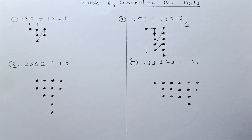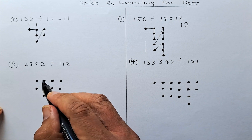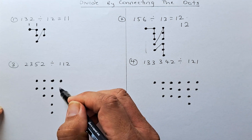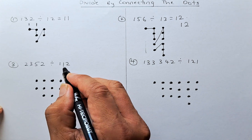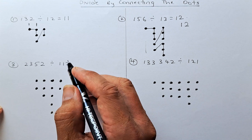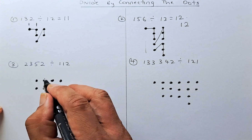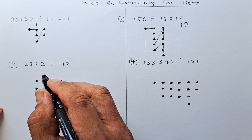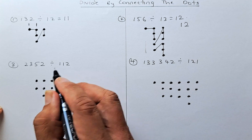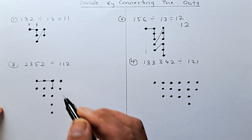Now we're going to do a bit harder one: 2,352 divided by 112. That's two dots, followed by three dots, followed by five dots, followed by two dots. You are joining the first column one dot, second column one dot, and the next column two dots. You start with one dot, followed by one dot, then two dots — that's the first connection.